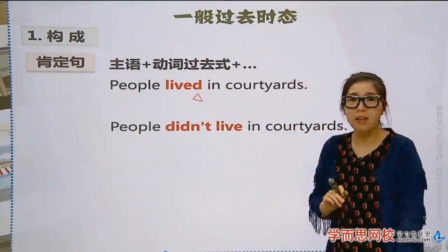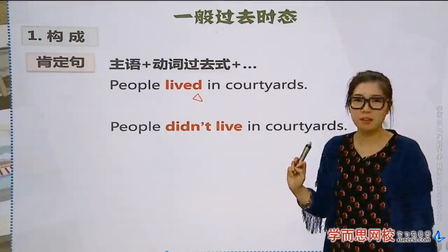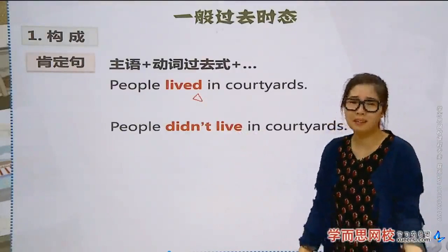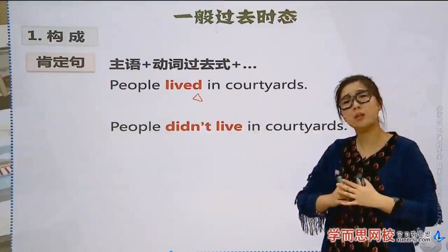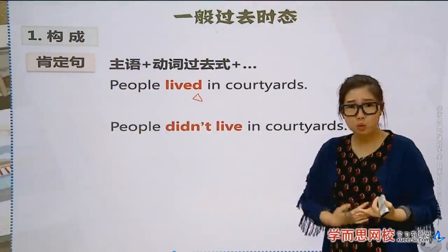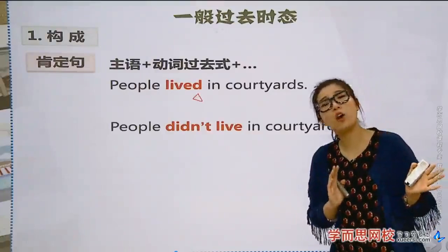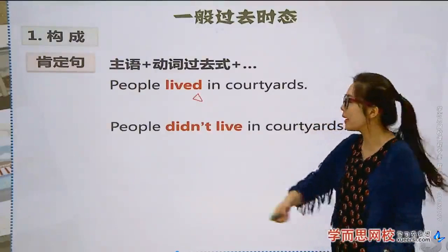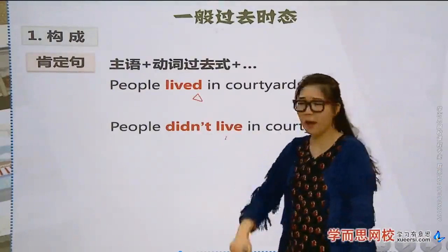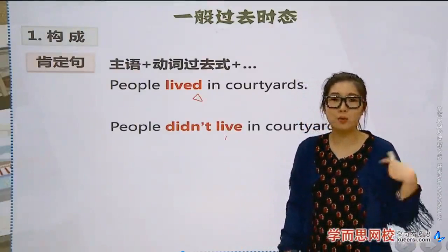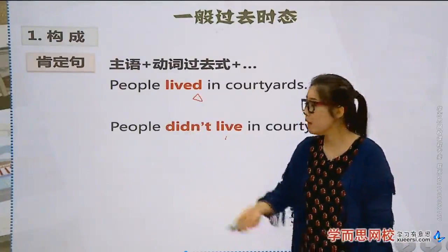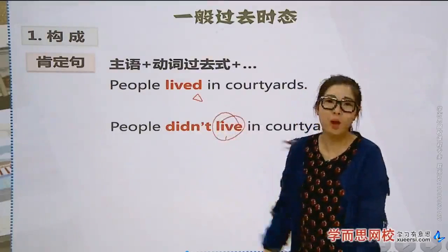Now how do we make it negative? People didn't live in the courtyard — where do we add 'not'? You can't just insert 'not' before or after the main verb. You need a helping verb — auxiliary verb. That's 'do,' and in past tense 'do' becomes 'did.' So for negatives, it's 'didn't.' Since 'did' is already in the past tense, the main verb 'live' does NOT need to change again.